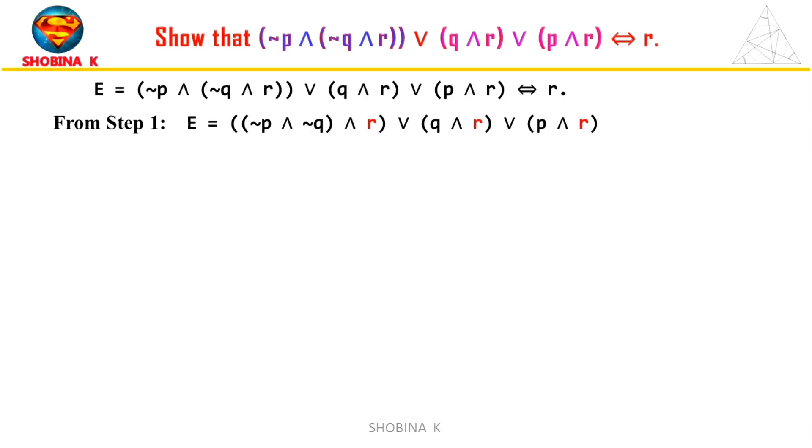Now, we need to factor out R. We can notice that all three terms of the expression contain the variable R. This expression is from step 1. Here, we use the distributive property of logical conjunction over disjunction. This law states that A and (B or C) is equivalent to (A and B) or (A and C).